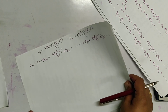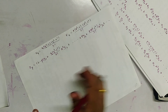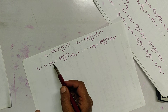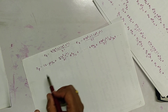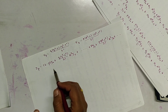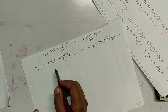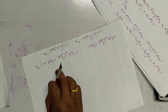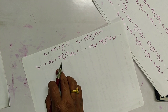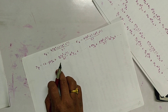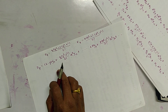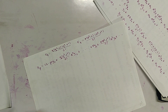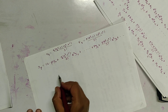Note that for applying Everett's interpolation, the data must be uniformly distributed, just as in Gauss interpolation, Stirling interpolation, and Bessel interpolation. If it is not distributed uniformly, then we use Lagrange interpolation.